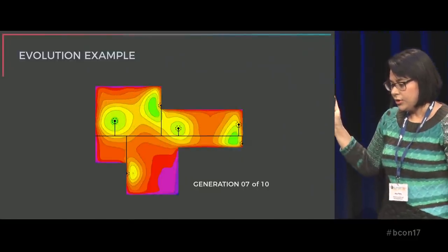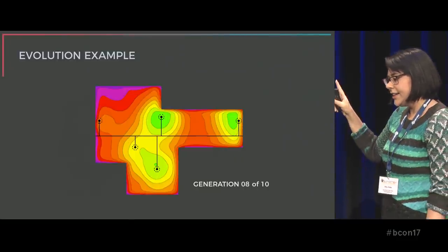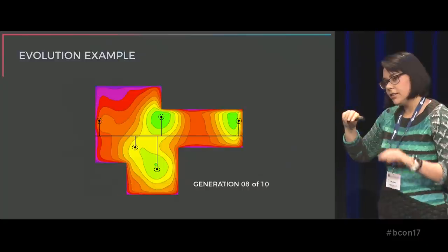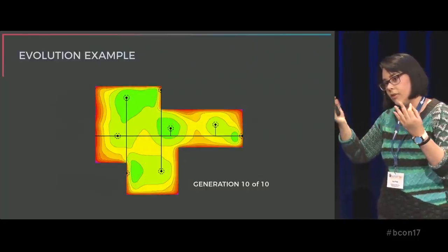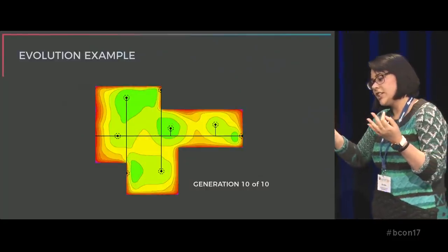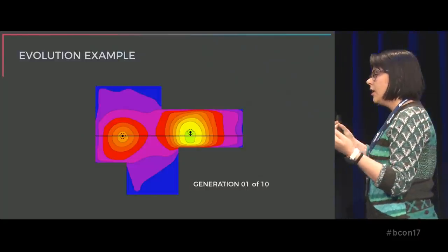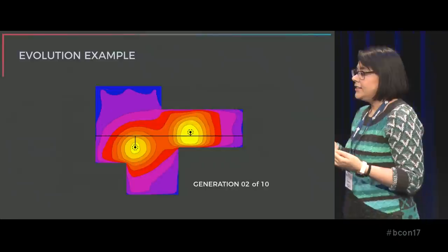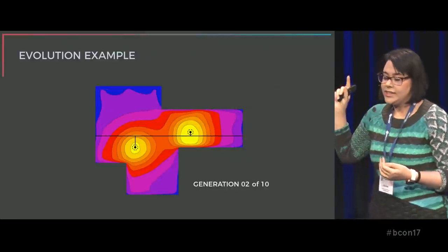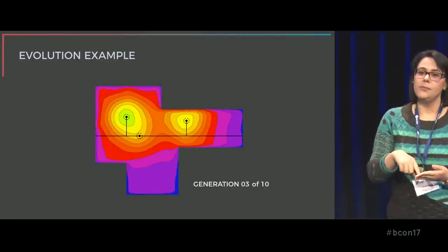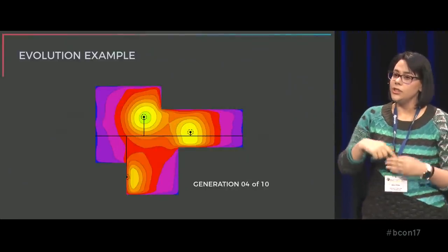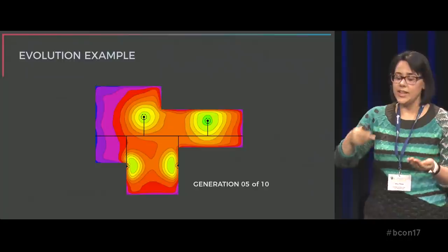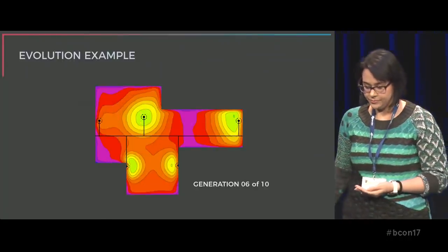This is an animation of a simple evolution example with 10 generations. What you are seeing here is not the same solution evolving through the generations, but each time it is one of the best solutions among the population of the current generation.